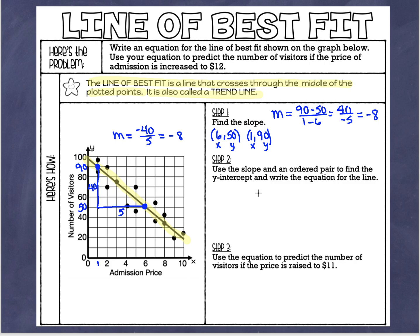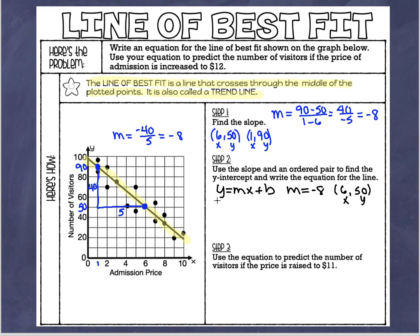Now that we have the slope, we start with slope-intercept form: y equals mx plus b. I'll note that my slope is negative 8, and I'll pick one of my ordered pairs to use — I'll use (6, 50). I have my slope (m), and my ordered pair gives me x and y values. I'll plug these in: in place of y I put 50, in place of m I put negative 8, and in place of x I put 6, plus b.